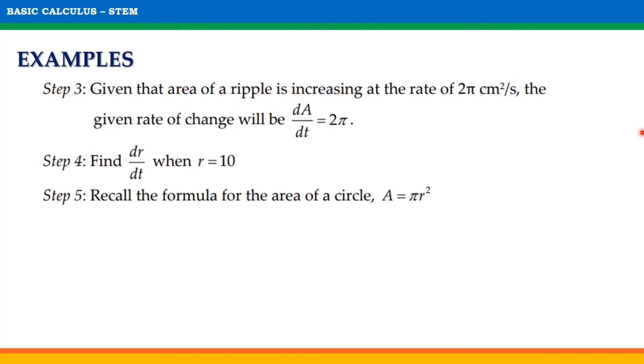Step 5: Recall the formula for the area of a circle, A = πr². Step 6: Differentiate A = πr² applying the chain rule. dA/dt = π(2r)(dr/dt).